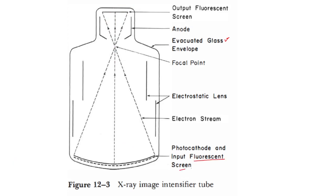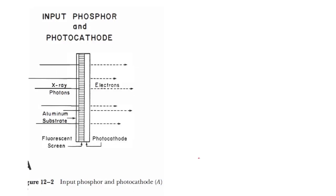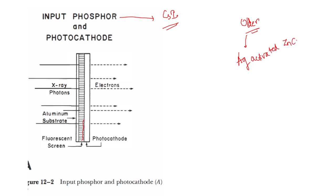Now let us learn about each part in detail. First, the input fluorescent screen or photocathode. This input fluorescent screen is mainly made up of cesium iodide (CsI). Older image intensifiers used silver-activated zinc cadmium sulfide as the input phosphor.